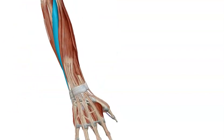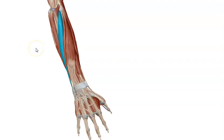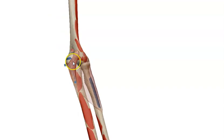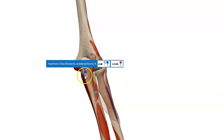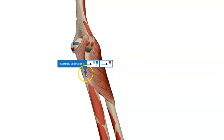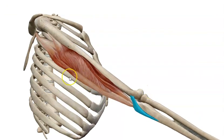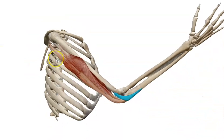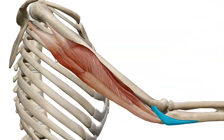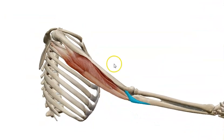Finally, anconeus is a small, short, triangular muscle present just behind the elbow. It attaches to the back of the lateral epicondyle of the humerus and inserts into the olecranon process of the ulna and the upper part of the posterior surface of the ulna. Because it crosses behind the elbow joint, its action is extension of the elbow joint.